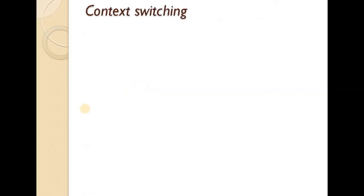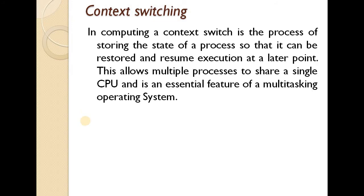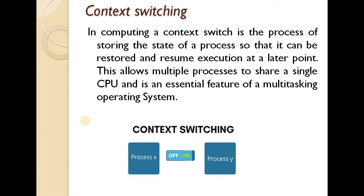Next we'll move on to context switching. In computing, a context switch is the process of storing the state of a process or thread so that it can be restored and resume execution at a later point. This allows multiple processes to share a single CPU and is an essential feature of a multi-tasking operating system. In a multi-processing or multi-tasking OS, when process Y wants to execute, we remove process X from the CPU and put process Y in — switching the context.